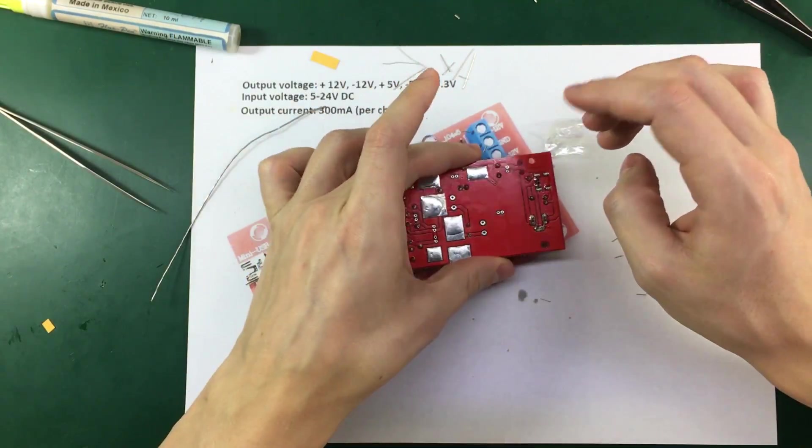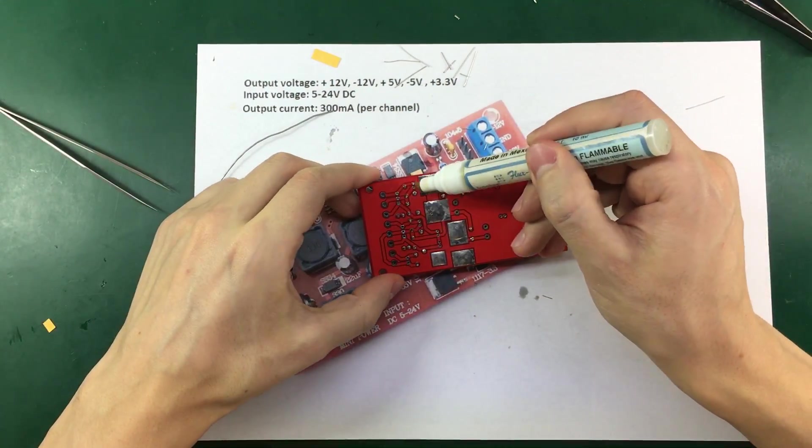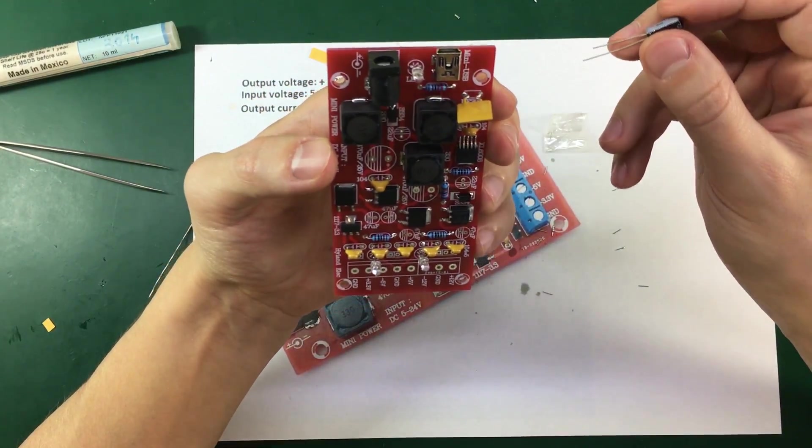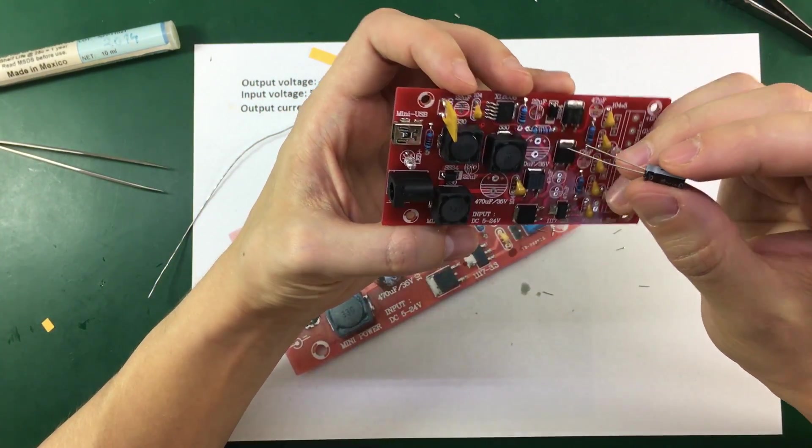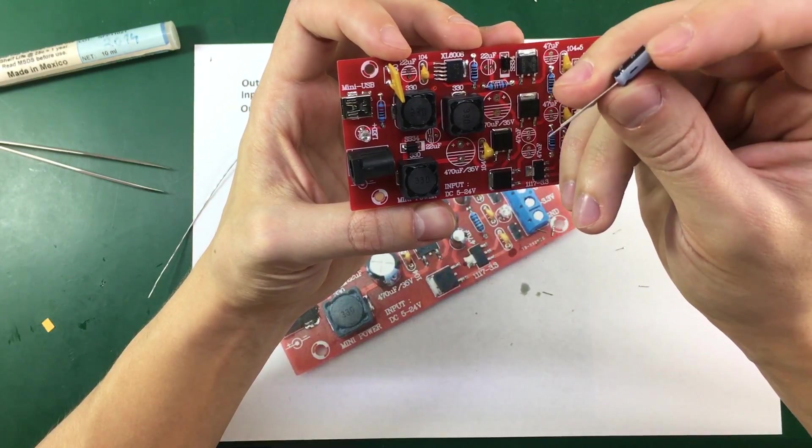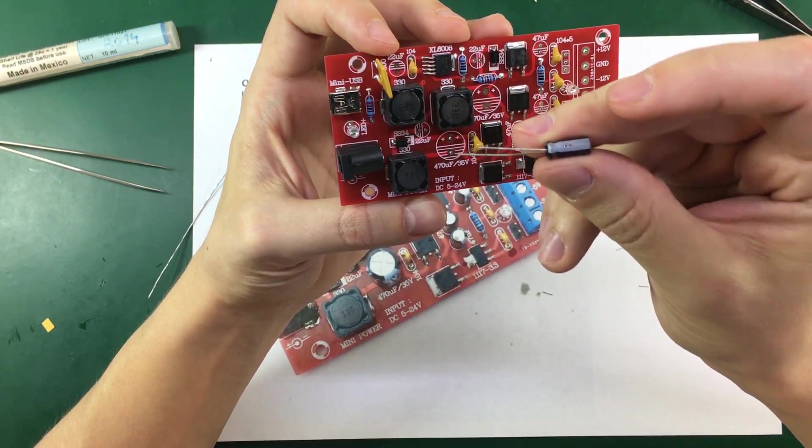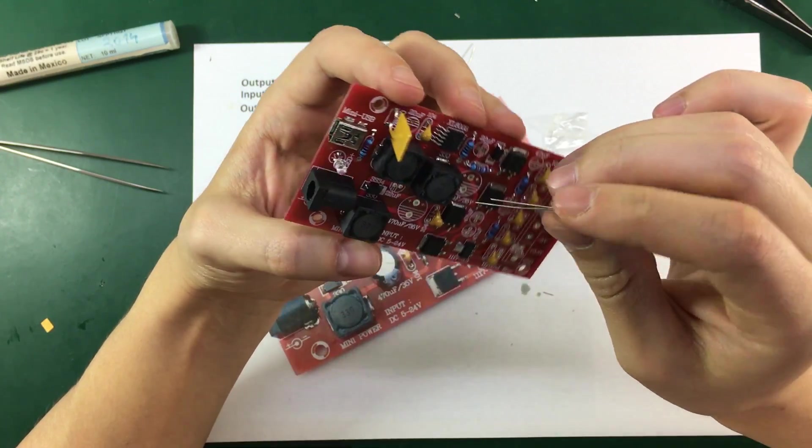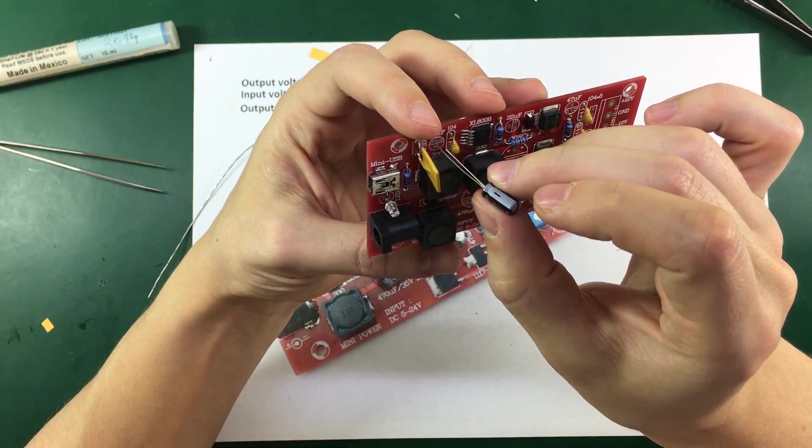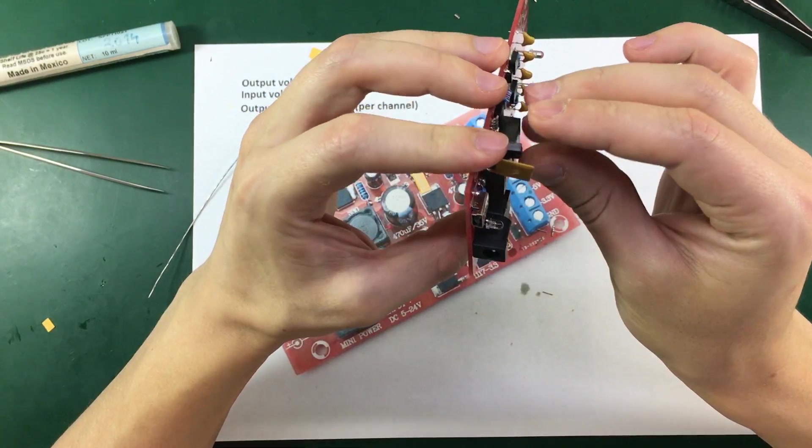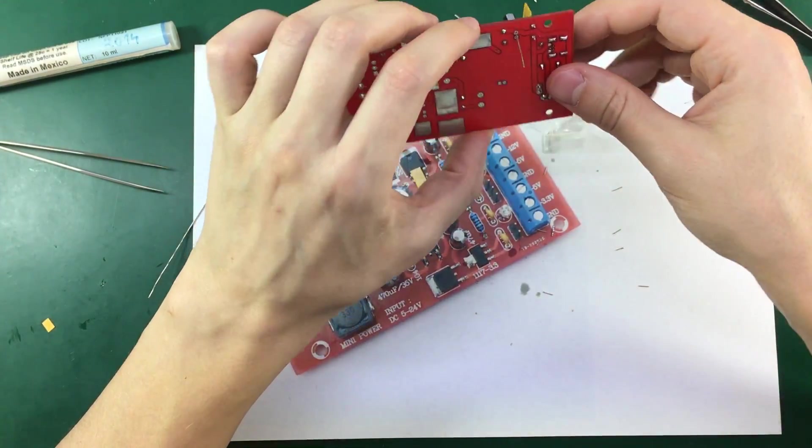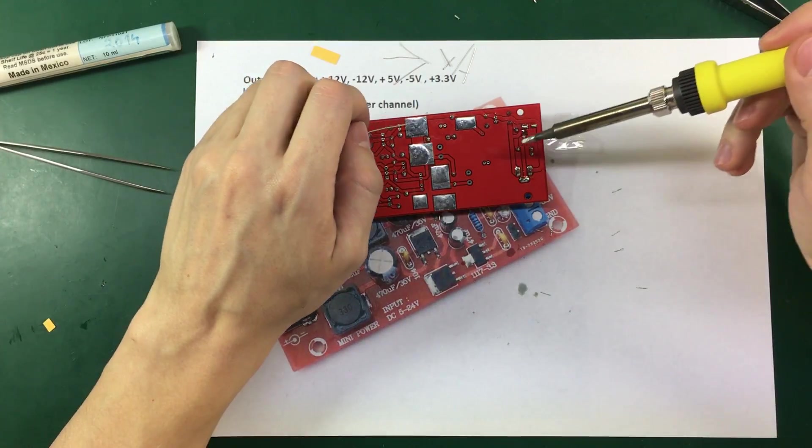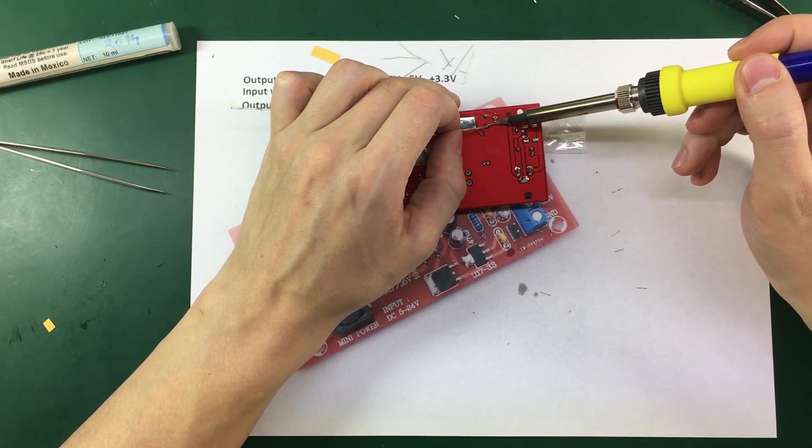Next let's also solder in the electrolytic capacitors. Let's start with this smaller one, 22uF. And we have the negative lead marked on the capacitor and is also the shorter lead. And we also have the negative lead marked on the PCB. So you do need to be careful and follow the polarity on these electrolytic capacitors. Because they might explode when reverse biased.